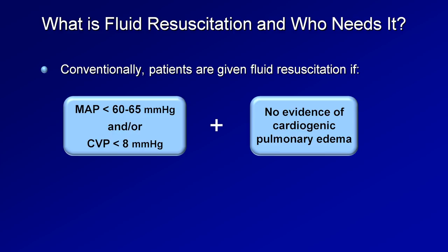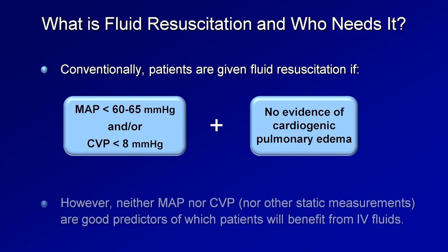This is what I was taught to do as a medical student and what I practiced as a resident and for the first few years out of residency. It's still what a lot of students are taught. Unfortunately, this is not good practice. That's because neither MAP nor CVP are good predictors of which patients will benefit from IV fluids. In other words, a patient may be hypotensive and have a low CVP, but rapid administration of fluids does not necessarily improve their hemodynamics.